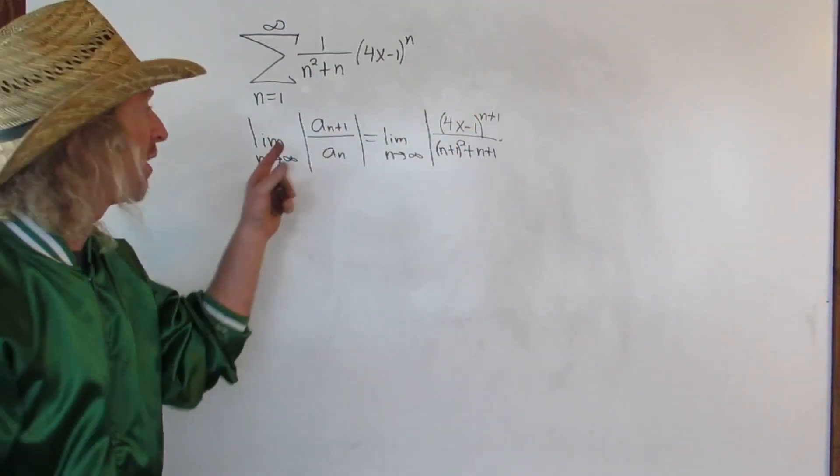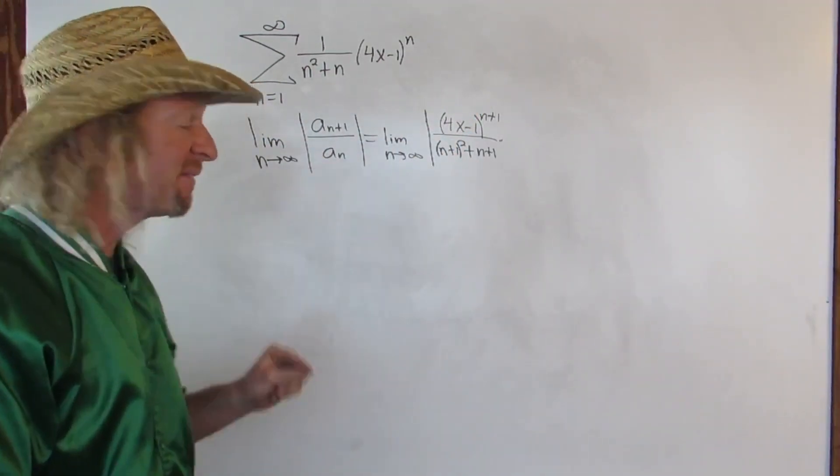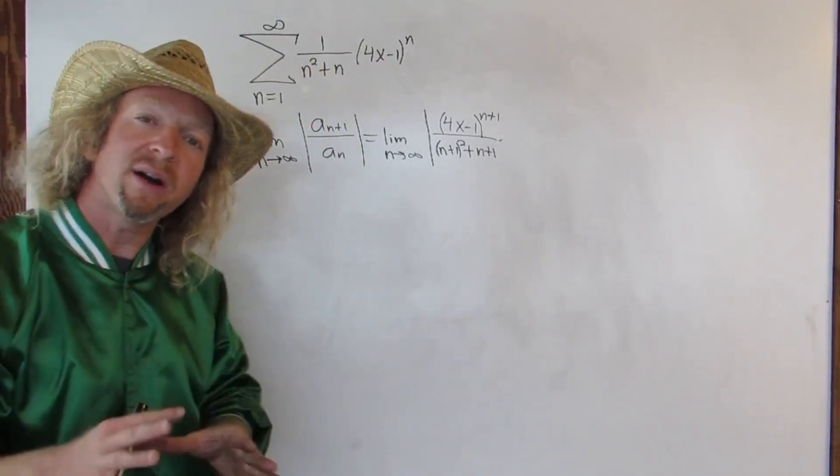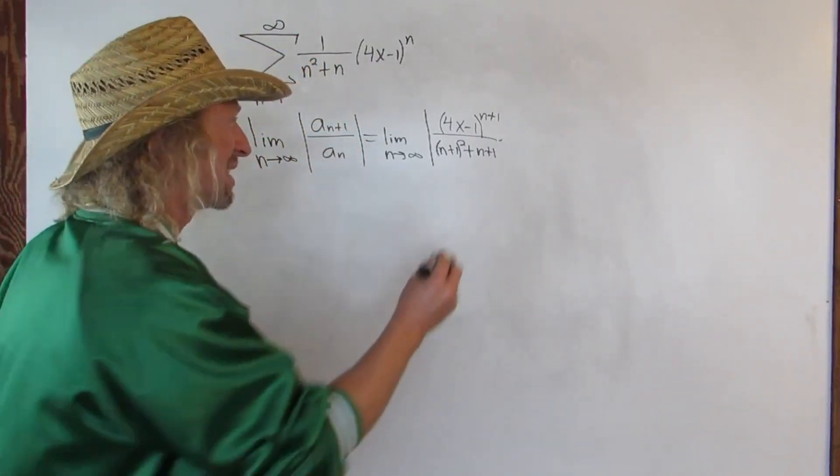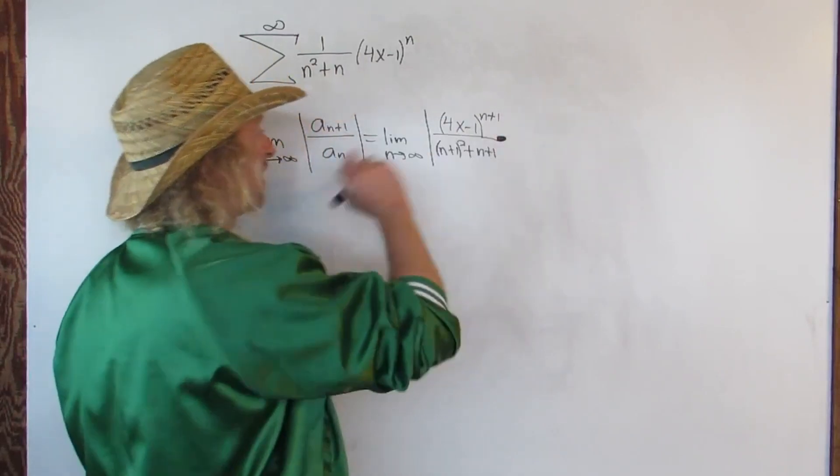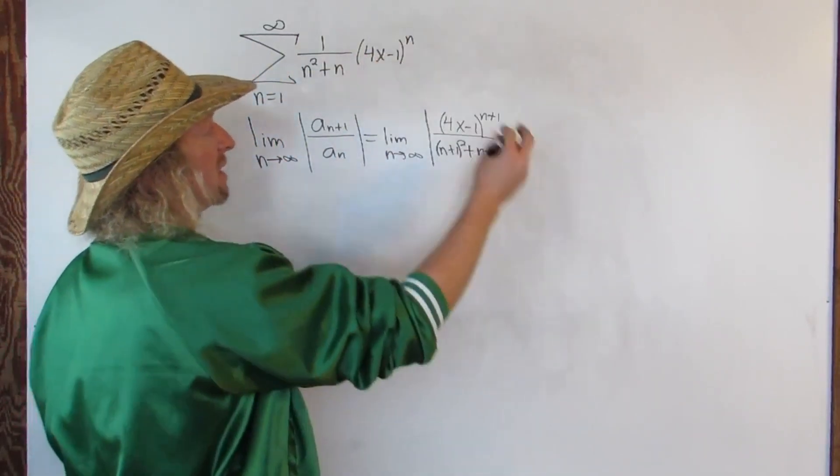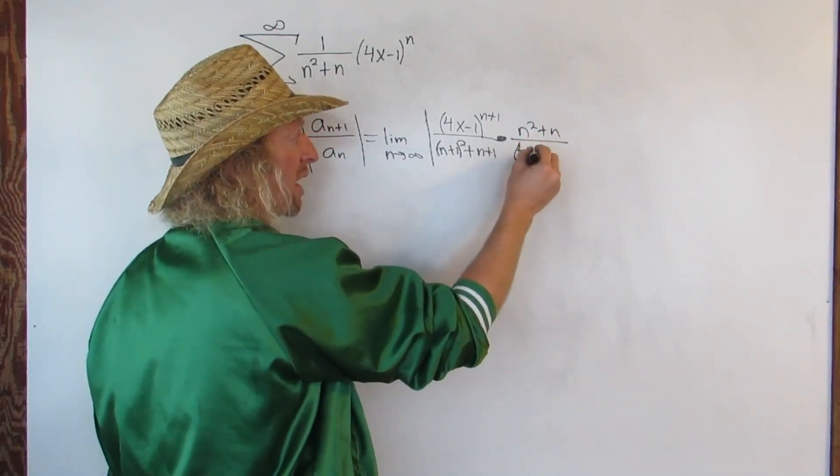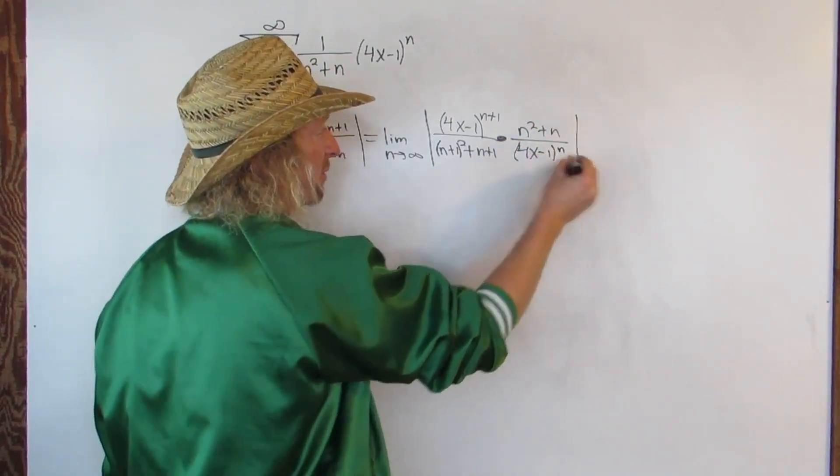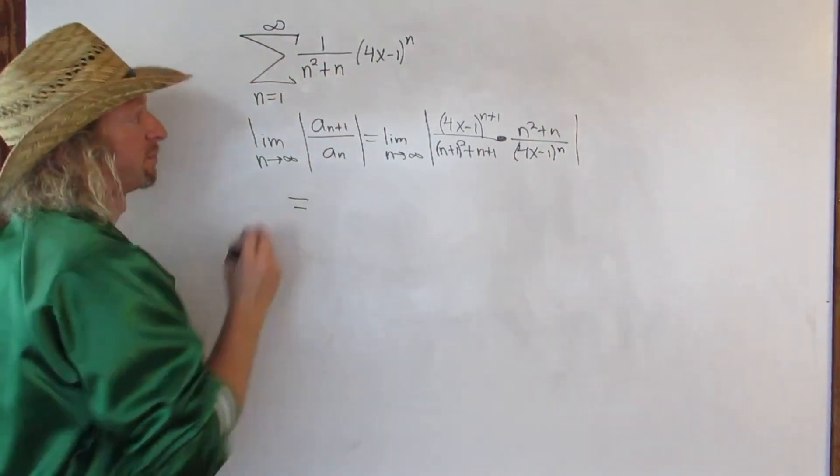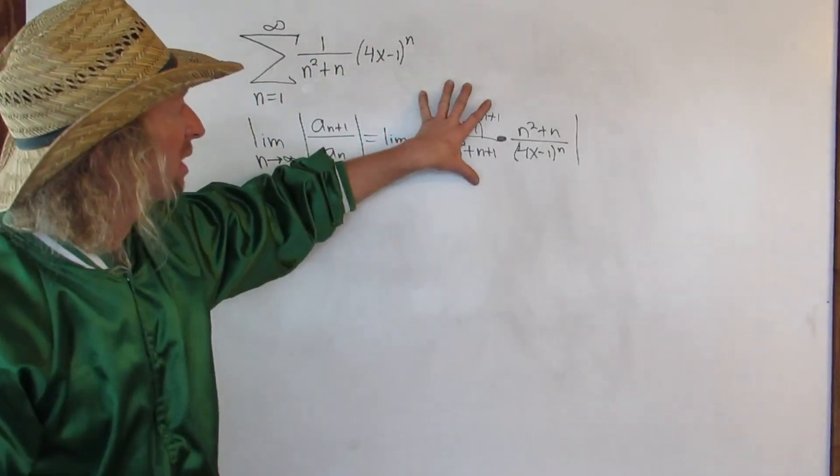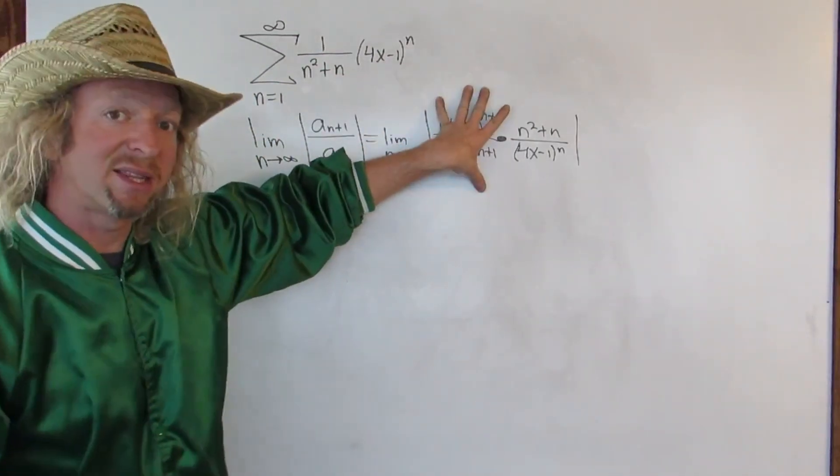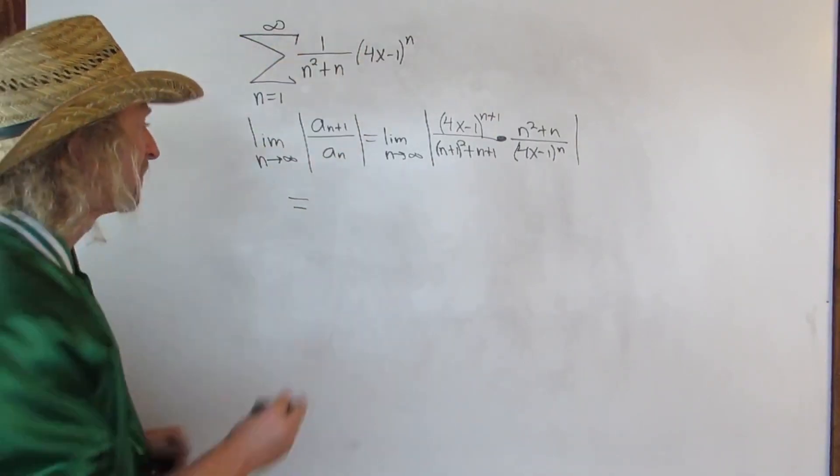So all that's written on the board so far is a sub n plus 1. Now we have to divide by a sub n. But when you divide, you multiply by the reciprocal. So this is times. So you flip it. So we're just going to flip this thing. So it's n squared plus n over parentheses 4x minus 1 to the n. Boom, beautiful stuff. This is equal to. So basically, plugged in n plus 1 for all of the n's. We got this. Then we divide it by a sub n, so we just ended up flipping it.